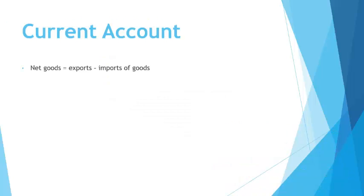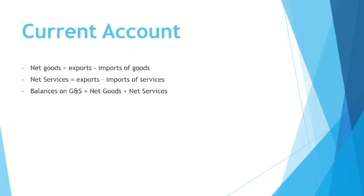Let's look at these components. The first is net goods, or exports minus imports of goods — fairly straightforward. We also have net services, so we're talking about things like tourism and education. Not only do we have imports and exports of goods, but we also have a separate category for services. The balance of goods and services is basically those two added together.